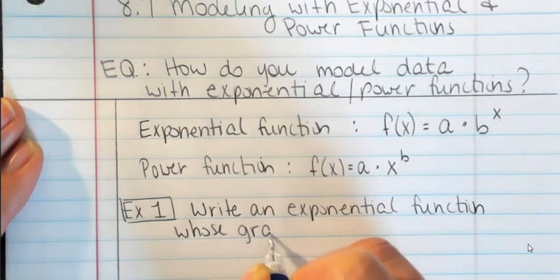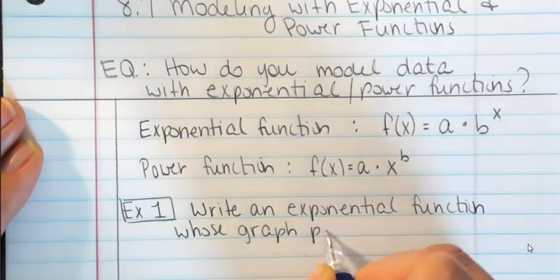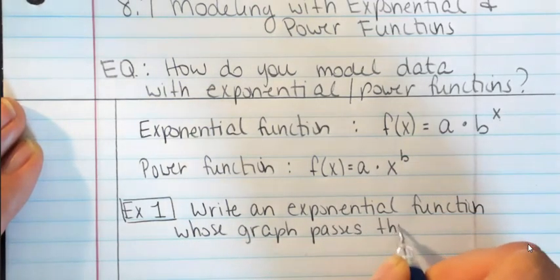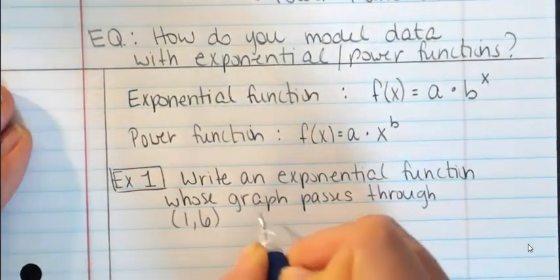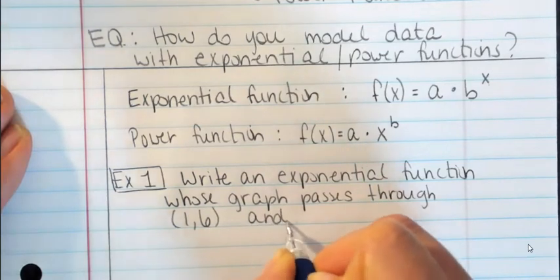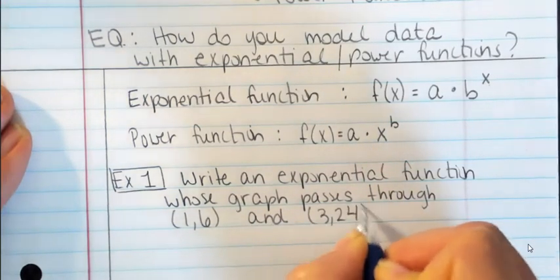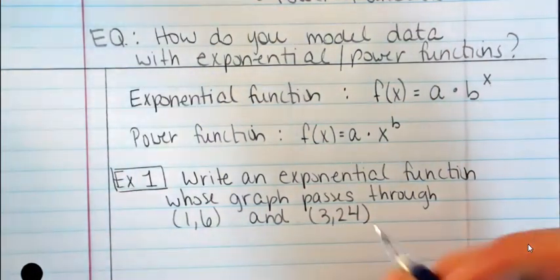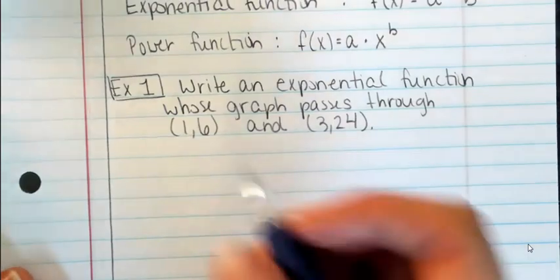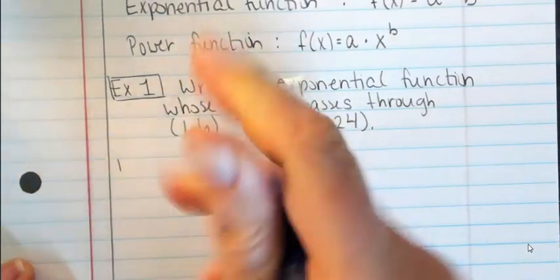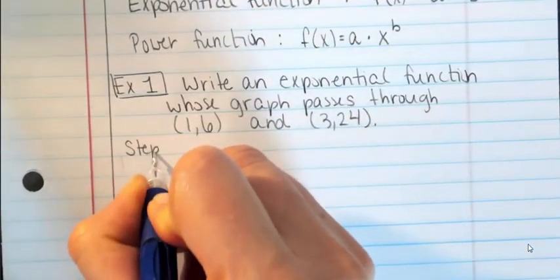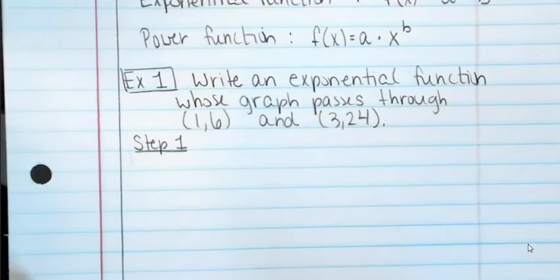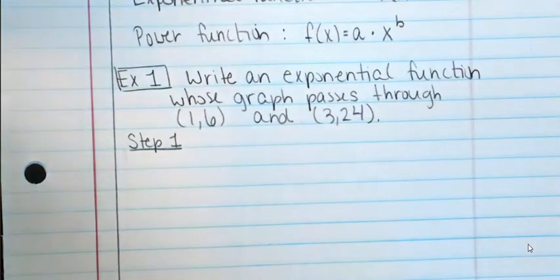We're going to write an exponential function whose graph passes through the two points (1, 6) and (3, 24). Let me write down the steps as a guide. Step one: you're going to set up a system of equations — two equations that you'll create and then solve.